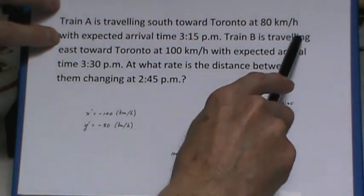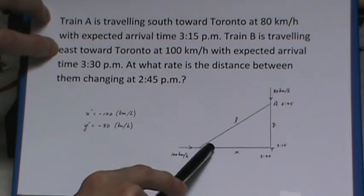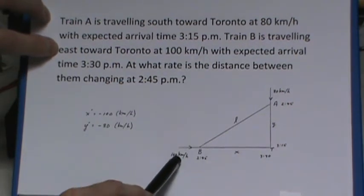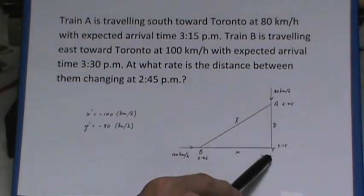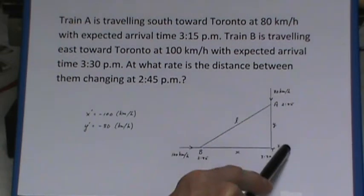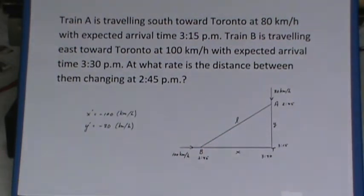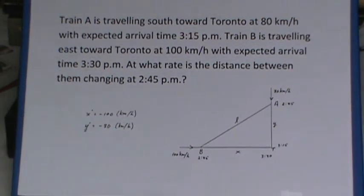Train B is traveling east toward Toronto at 100 kilometers per hour. I've marked it right here. Expected arrival time of 3:30. So I've got the 3:30 arrival time for this train along here and the 3:15 so that I can keep track of this one. And just like the last question, I want to know at what rate is the distance between them changing at 2:45.